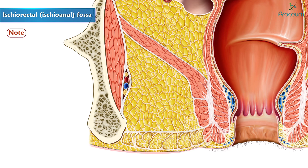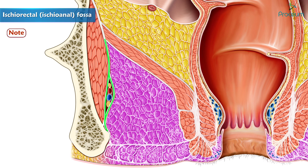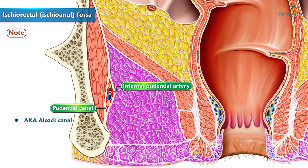An important point to be noted here is that crossing the lateral margin of the ischiorectal fossa is the pudendal canal, also called the Alcock canal. It contains the internal pudendal artery, the internal pudendal veins, and the pudendal nerve.